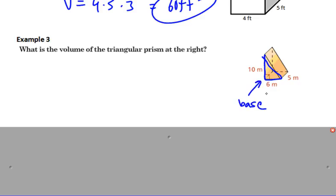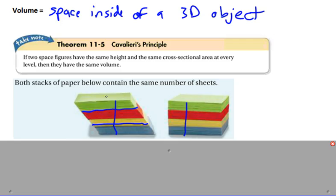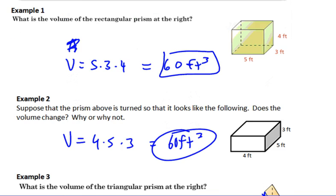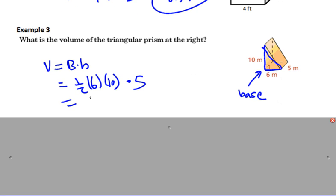So the volume would be equal to the area of the base times the height. The area of the base for this one would be 1/2 times 6 times 10, and then you multiply that by the height, which is 5. 5 would be the height if you're looking at it that way. 1/2 of 6 times 10 would be—6 times 10 is 60. Half of that would be 30 times 5, which equals 150 meters cubed.